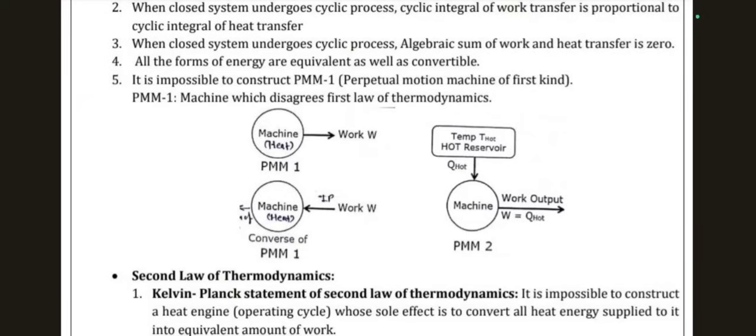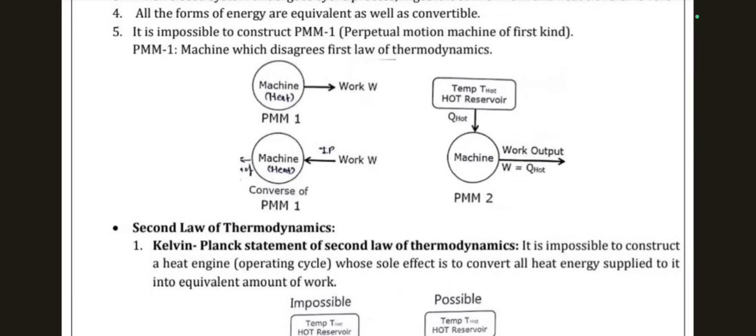The fourth point: all forms of energy are equivalent and convertible. Fifth: it is impossible to construct a PMM1 — a perpetual motion machine of the first kind. A perpetual motion machine is a mechanism that does not follow the laws of thermodynamics. It disagrees with the 1st law of thermodynamics, and therefore it is impossible to construct one.